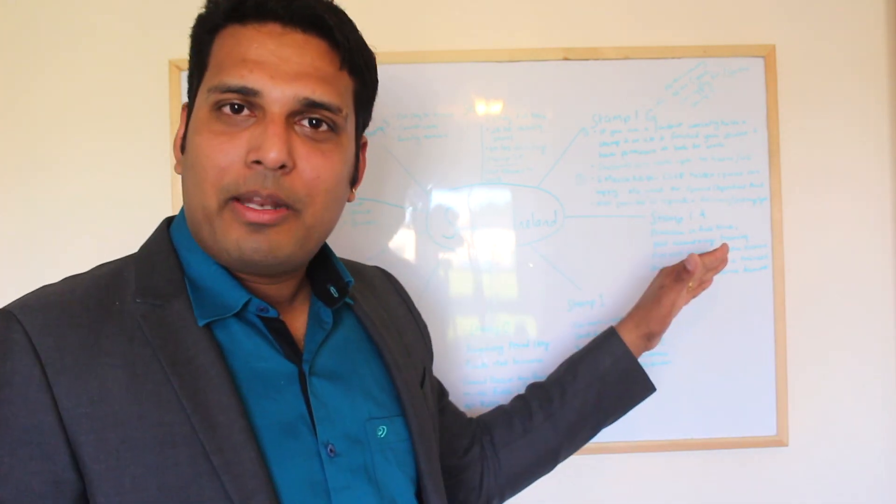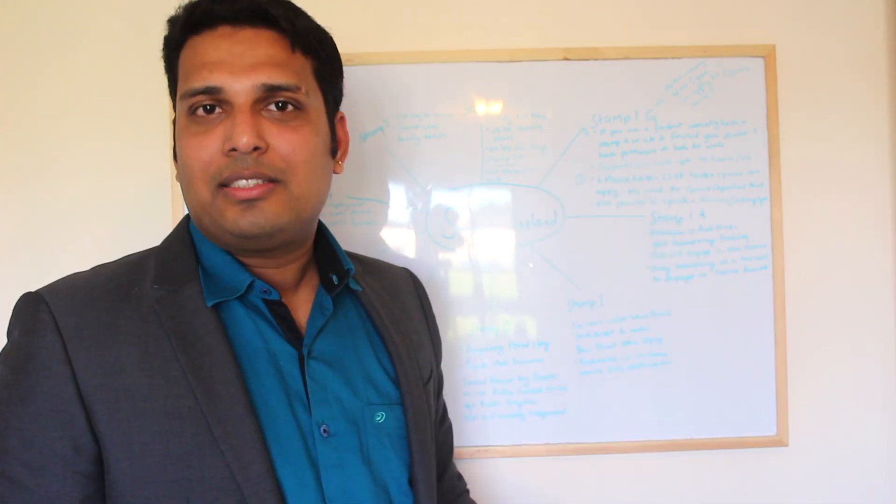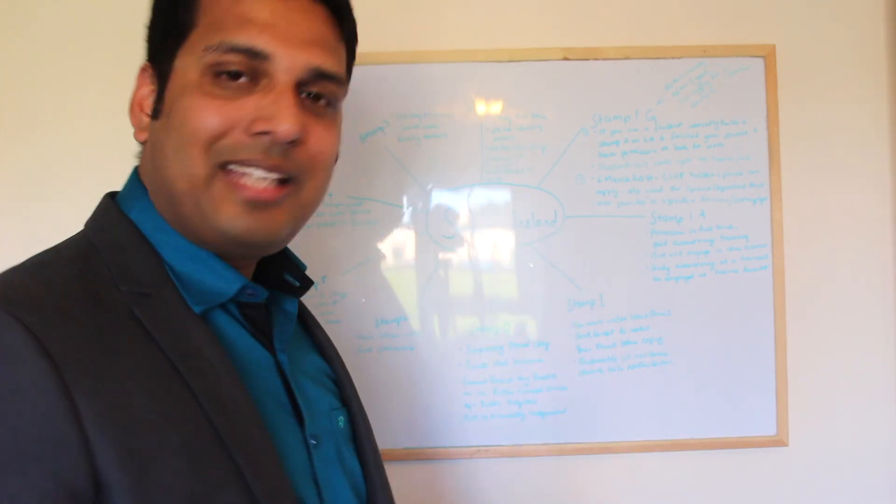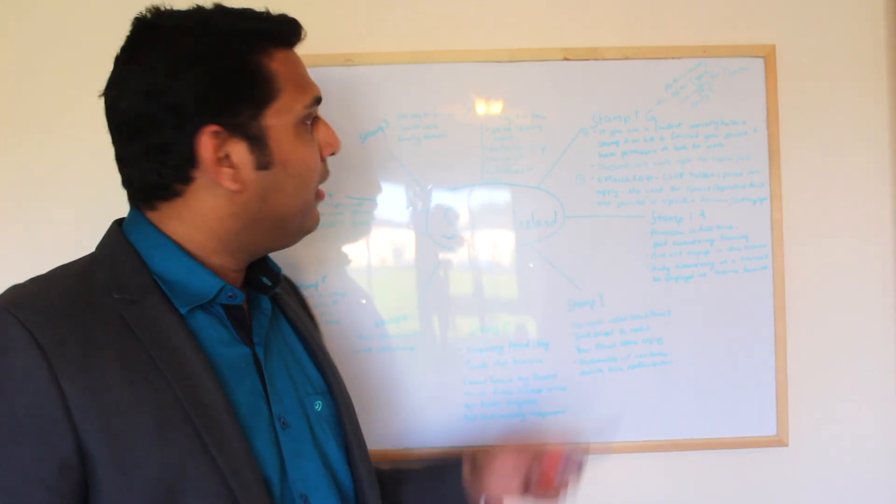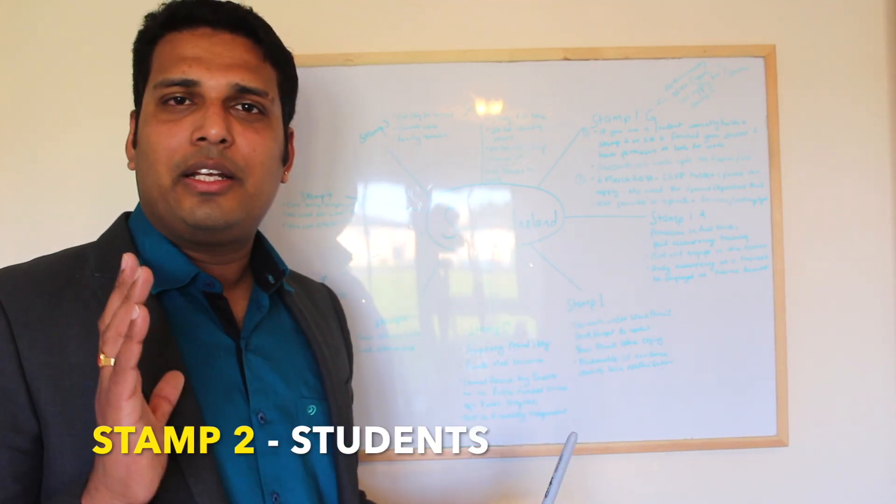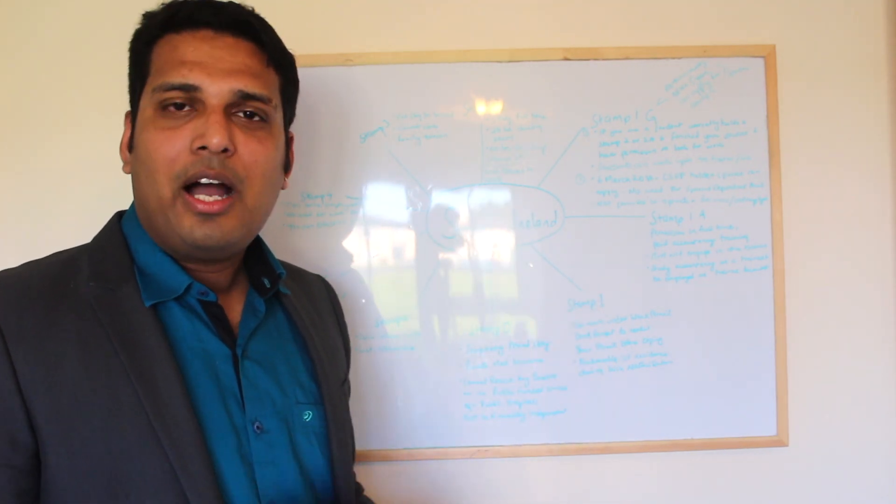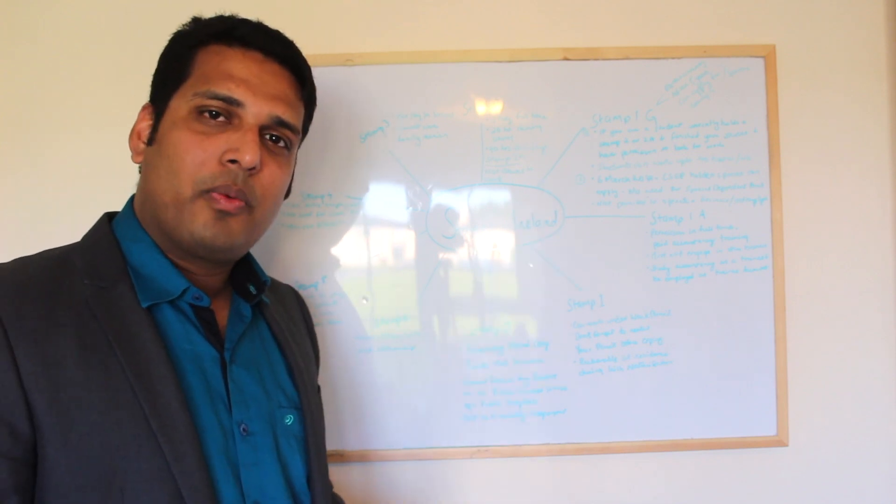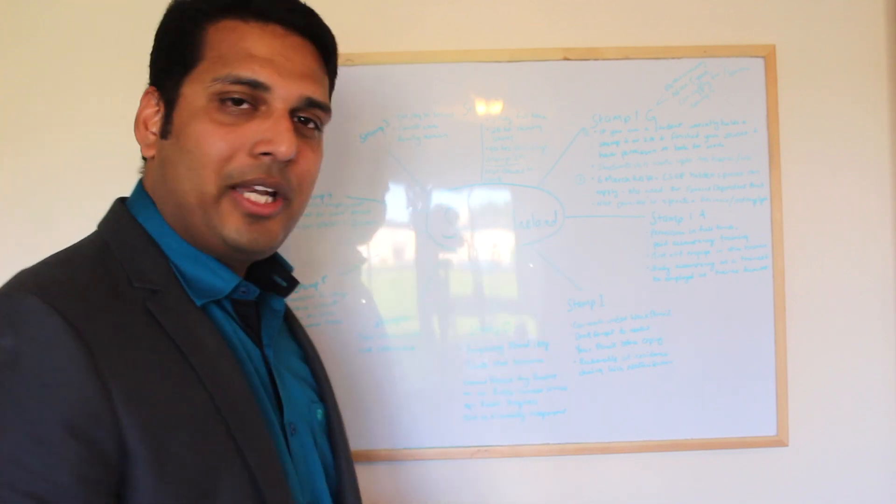Stamp 1G is only applicable to spouses of critical skills employment permit. Next stamp is stamp 2. This is for students in Ireland studying full-time. During your college hours, you can work up to 20 hours per week. During your holiday period, you can work up to 40 hours per week.